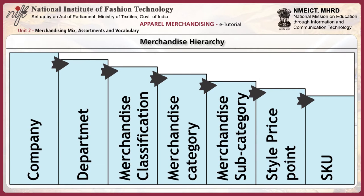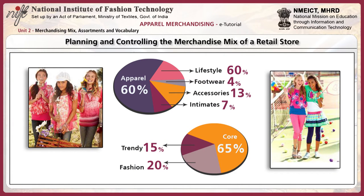This is the merchandise hierarchy. At the lowest level is the SKU, followed by style price point, merchandise subcategory, merchandise category, merchandise classification, then the department, and finally the company. Planning and controlling the merchandise mix of a retail store is the crux and the entire blueprint for effective and efficient management of a retail store.